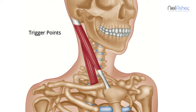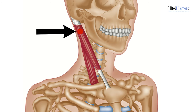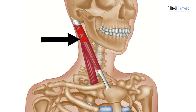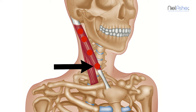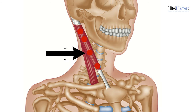Trigger points can occur in both divisions. We'll look firstly at the sternal division, which is the more superficial. There are trigger points here, here, there, and sometimes right down the bottom. The most important is in the mid zone. The reason this muscle is missed so often is that you hardly ever feel pain where the trigger points occur.